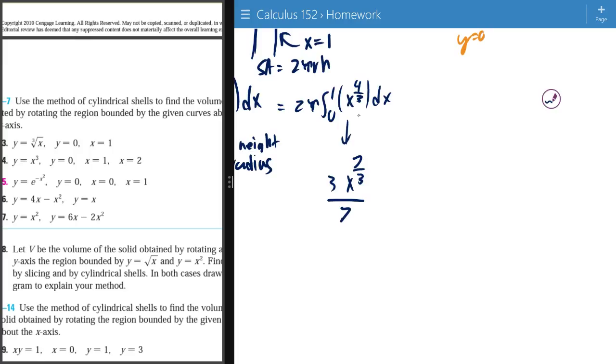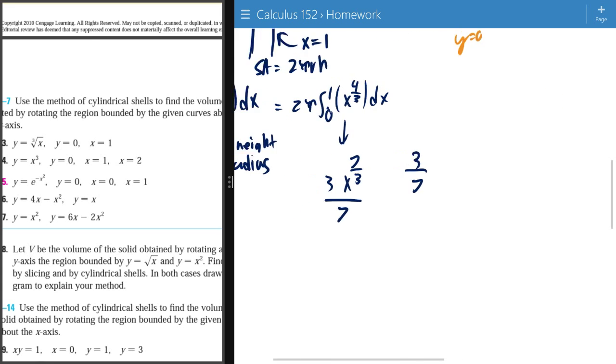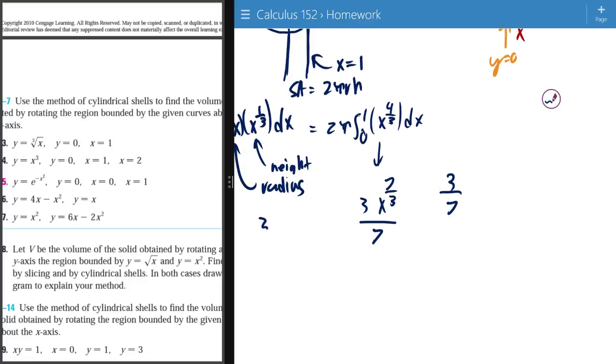Then next we just find the limits. So we plug in one, it's going to be three over seven because one to the power of seven over three is just one and one times three equals three and three is three over seven. Then zero we've already looked at this and see that it's just going to be zero so there's no point.